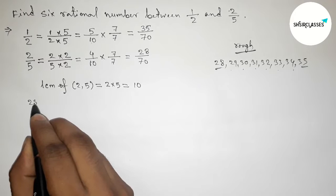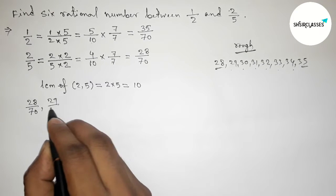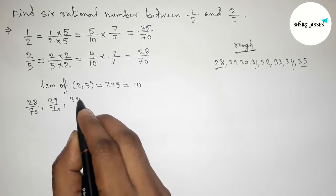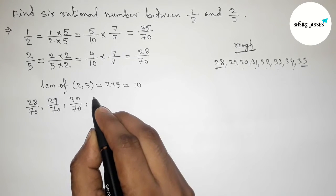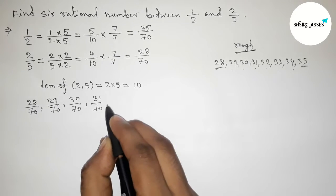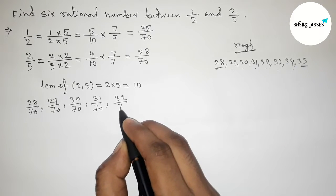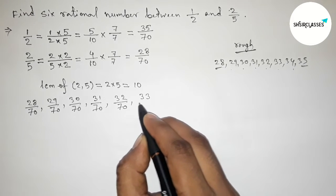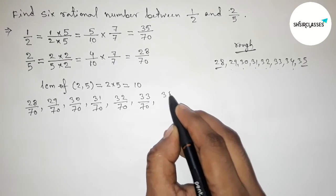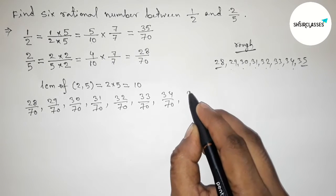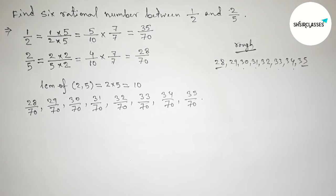First one is 28/70, then 29/70, then 30/70, then 31/70, 32/70, then 33/70, 34/70, and last one 35/70.